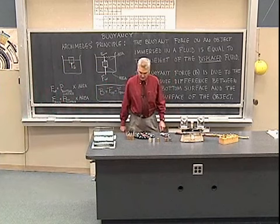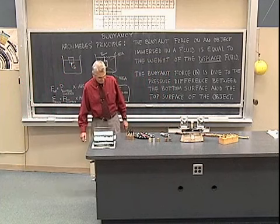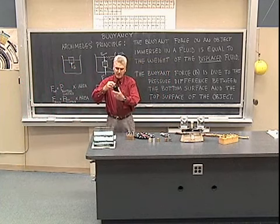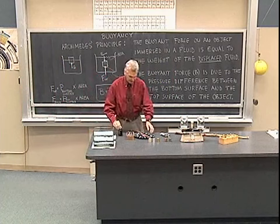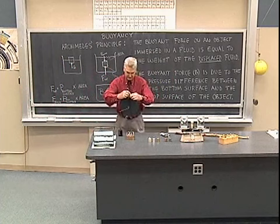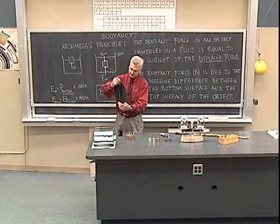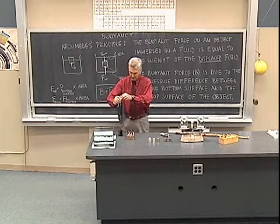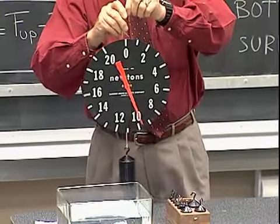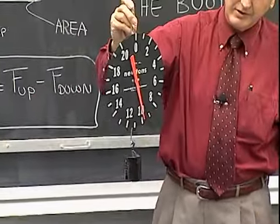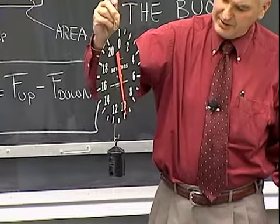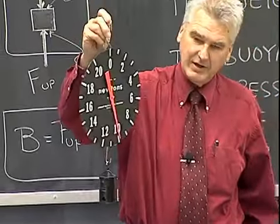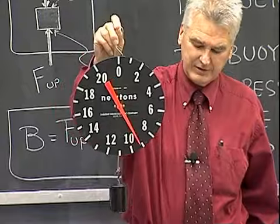Let me illustrate that with a demonstration. Here I have a 1 kilogram object and let's see how much it weighs. You probably know that 1 kilogram in Earth's gravitational field has a weight of 9.8 newtons — let's call that approximately 10 newtons.